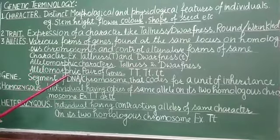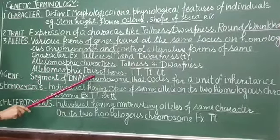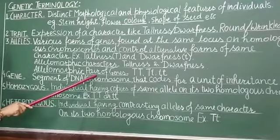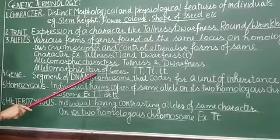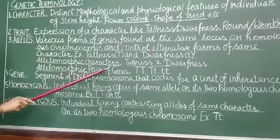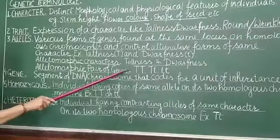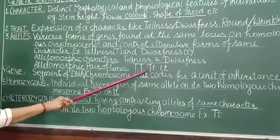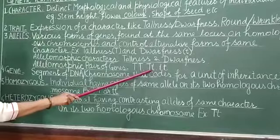Allelomorphic pair of genes. The pair of genes which controls the allelomorphic characters or the alternative forms of a character are known as allelomorphic pair of genes. It may be same like capital T, capital T or small t, small t or may be different capital T, small t.